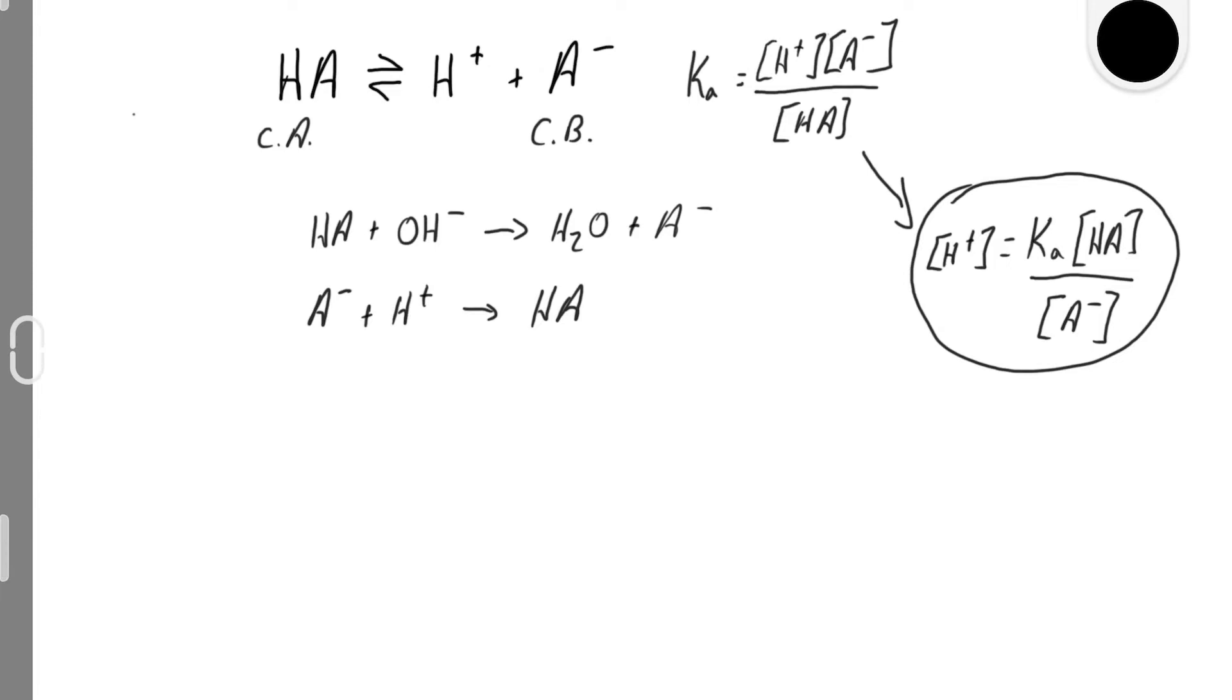has to remain constant as long as the HA concentration divided by the A- concentration stays relatively constant. In practice, as long as that ratio stays between 10 to 1 and 1 to 10, the pH remains relatively constant.